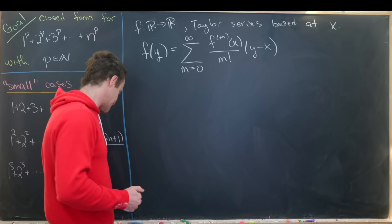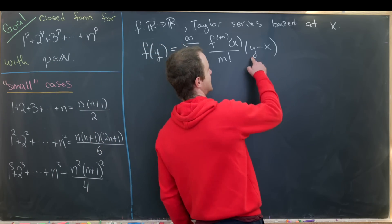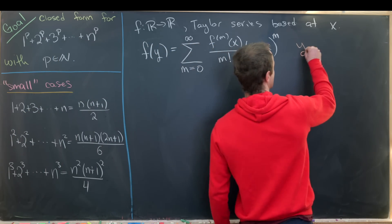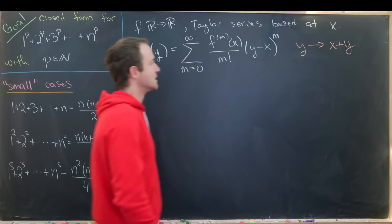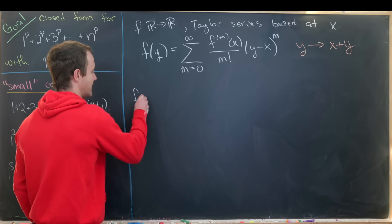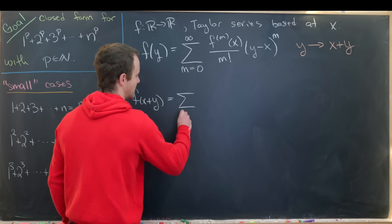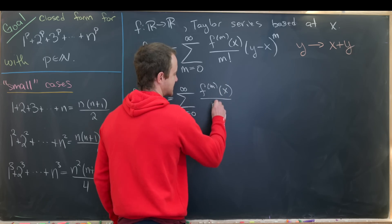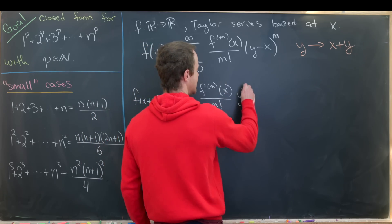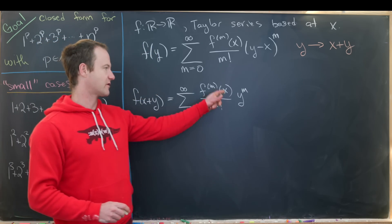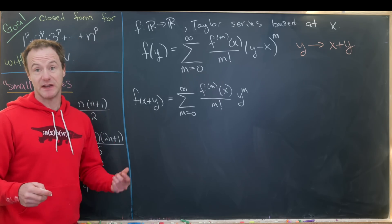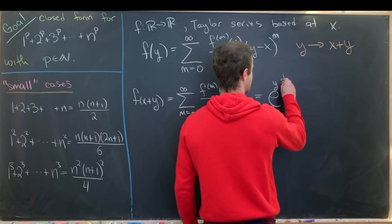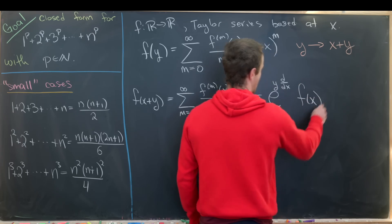We make the substitution y → x + y to simplify, giving f(x + y) equals the sum as m goes from 0 to infinity of the mth derivative at x over m factorial times y^m. We can write this cleverly using an exponential operator: e^(y · d/dx) operating on f(x), since expanding that operator reproduces exactly the same series.